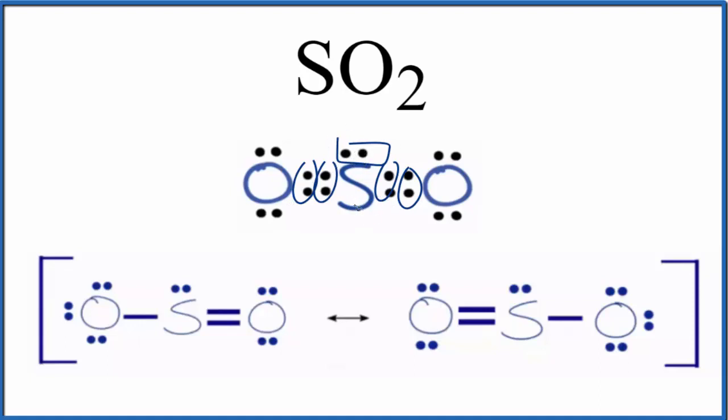Sulfur can actually have more than eight valence electrons. It can have an expanded octet, so this is an okay Lewis structure.